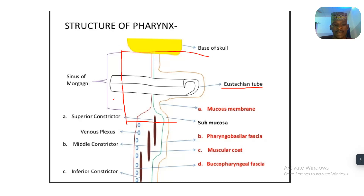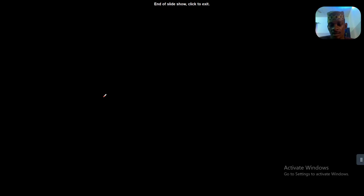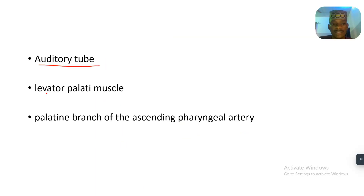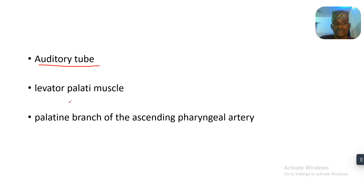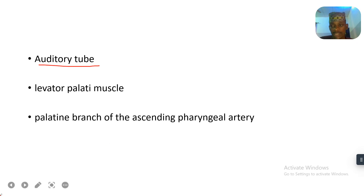In between here there's the sinus of Morgagni. So these are actually four structures. We have the tensor veli palatini muscle that passes through the sinus of Morgagni. You could just develop a memory aid for yourself. The importance is just attached to the structures that pass through this space.